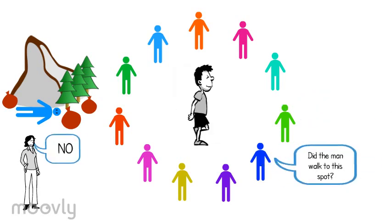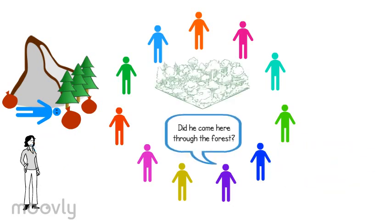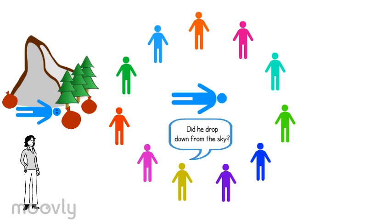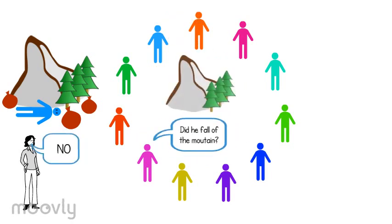Did he come here through the forest? No. Did he drop down from the sky? Yes. Did he fall off the mountain? No.